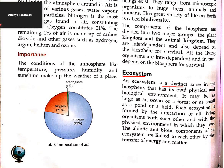An ecosystem is a distinct zone in the biosphere that has its own physical and biological environment. It may be as large as an ocean or a forest, formed by the interaction of all living organisms with each other and with the physical environment in which they live. The abiotic and biotic components of an ecosystem are linked to each other.